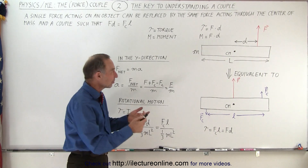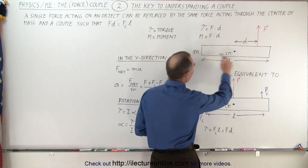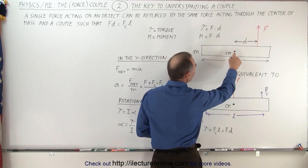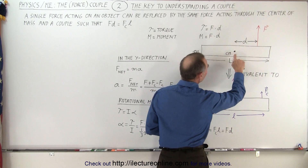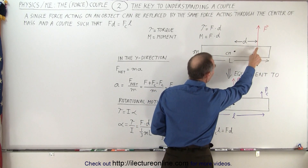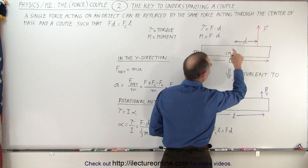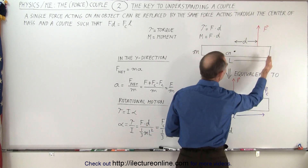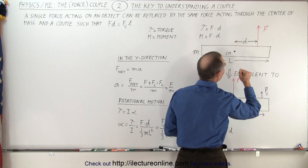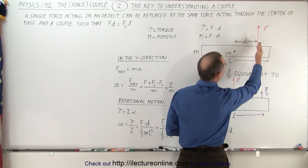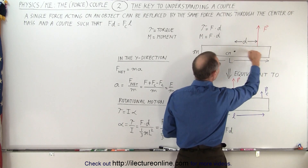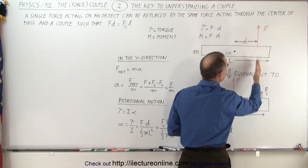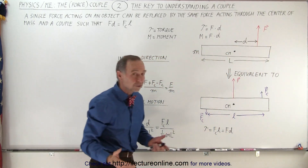In the first example at the top, we have a bar of mass M, length L. The center mass is right in the middle, and we're applying a single force F at a distance D away from the center mass. The line of action is distance D away from the center mass, and notice that there's a 90-degree angle between the direction of the bar and the direction of the force applied.